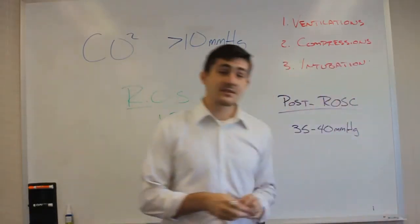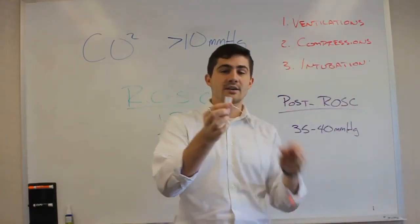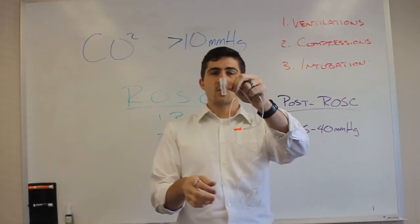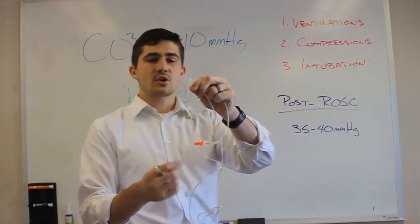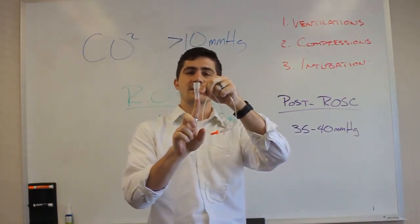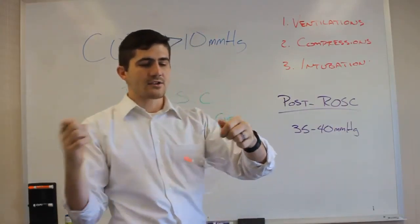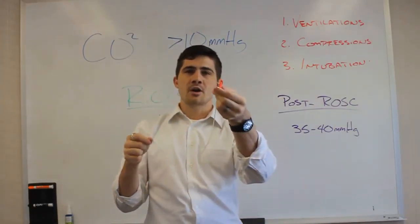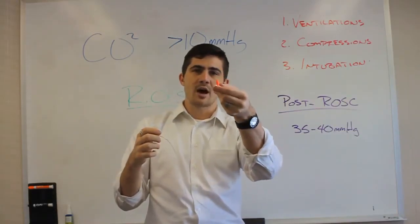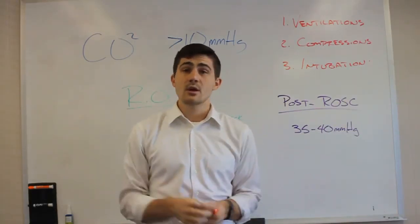For those of you who haven't seen it, this here is the device used for waveform capnography. It's going to plug into your ET tube, and then your BVM goes in on the top. And it's a little cord that'll either plug into your monitor or into the waveform capnography unit. And it just reads your CO2 levels.